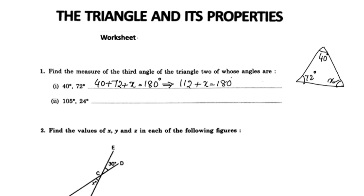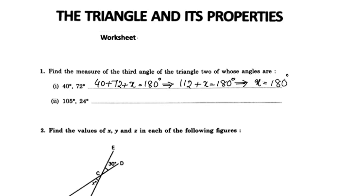72 plus 40 is 112, plus x is equal to 180 degrees. So x is equal to 180 minus 112, which is 68 degrees. x is equal to 68 degrees.